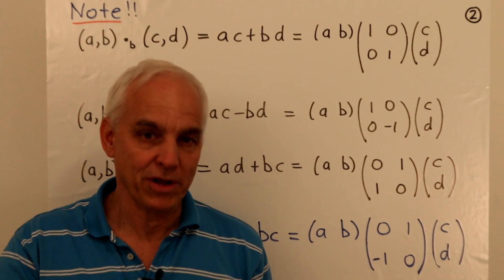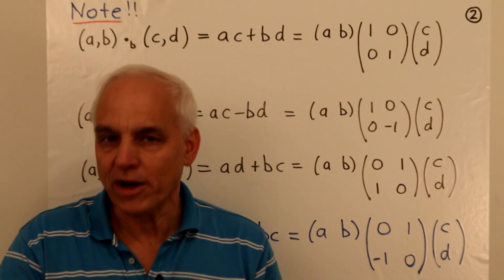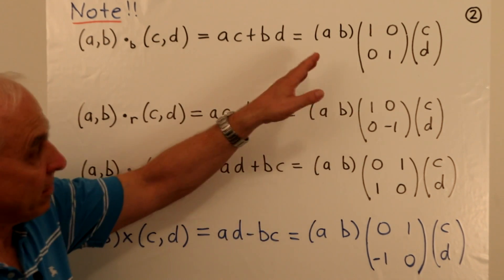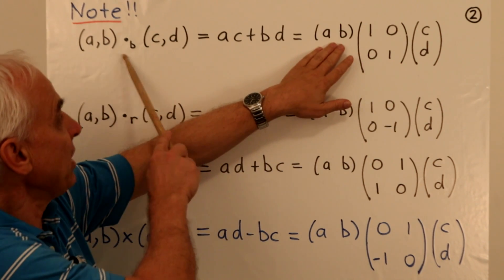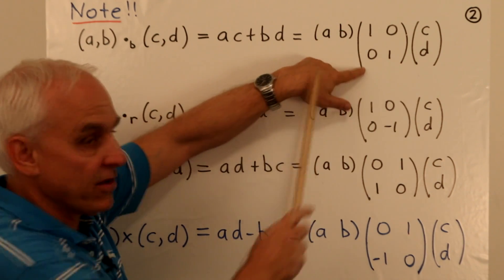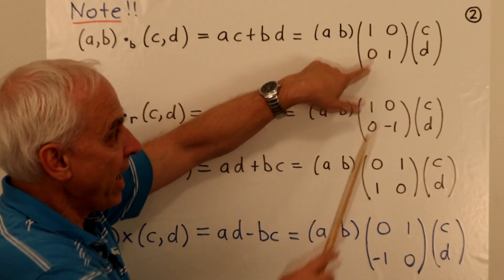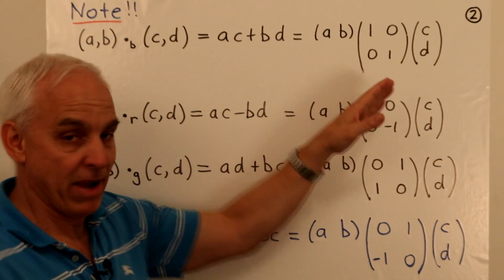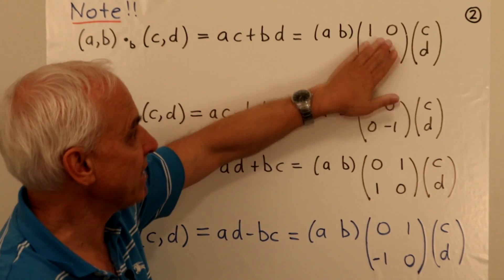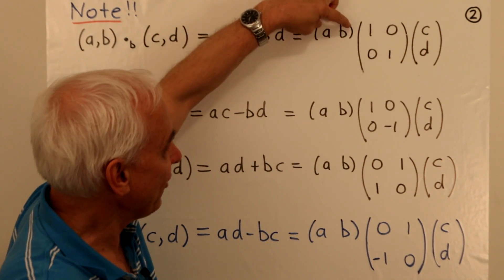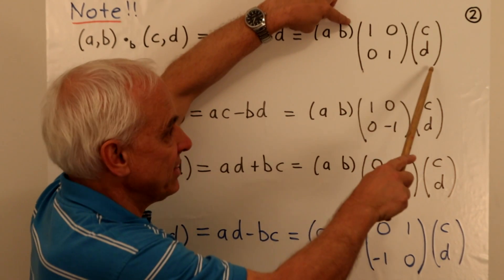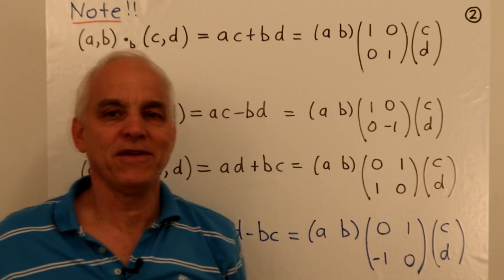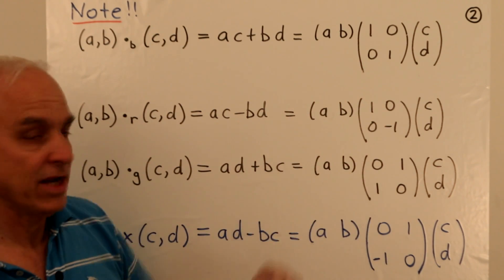These are really fundamental things in planar geometry. I want to show you how to use linear algebra to write these products in a pleasant way where we can compare them. The familiar blue dot product can be written in matrix form: we take the vector (a,b) as a row vector, multiply by the identity matrix [1,0; 0,1], and then the vector (c,d) as a column vector. This is the identity matrix, so it doesn't change anything. We can rewrite this as just (a,b) times the column vector (c,d), which equals ac + bd. But we put that matrix in anyway to distinguish it from the red and green situations and also from the cross product.